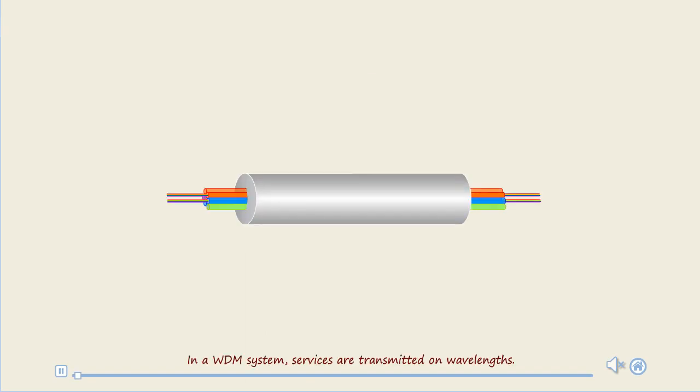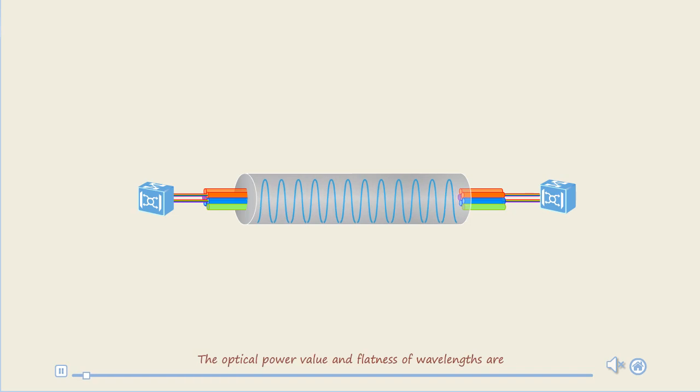In a WDM system, services are transmitted on wavelengths. The optical power value and flatness of wavelengths are important indicators of the service quality.